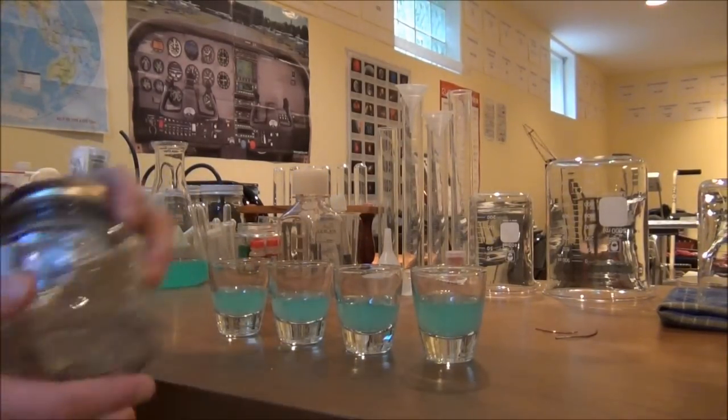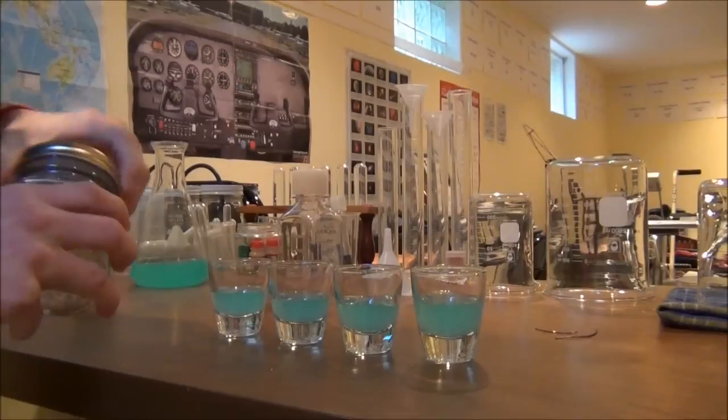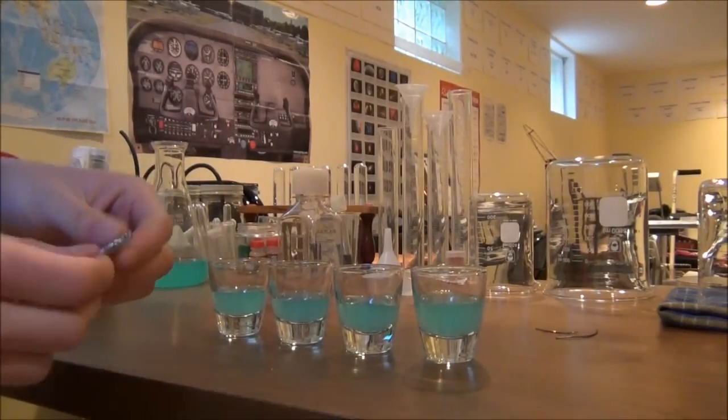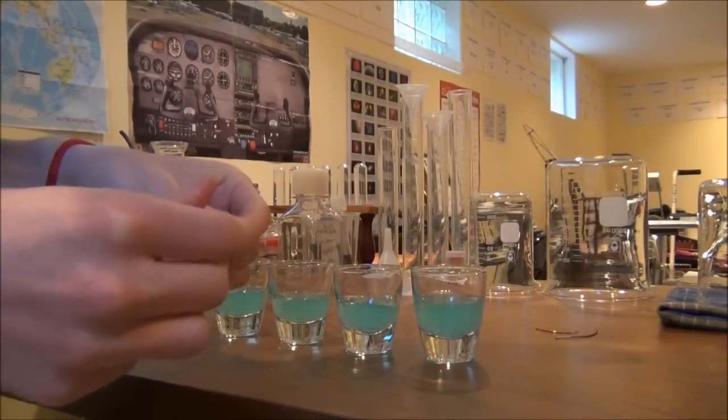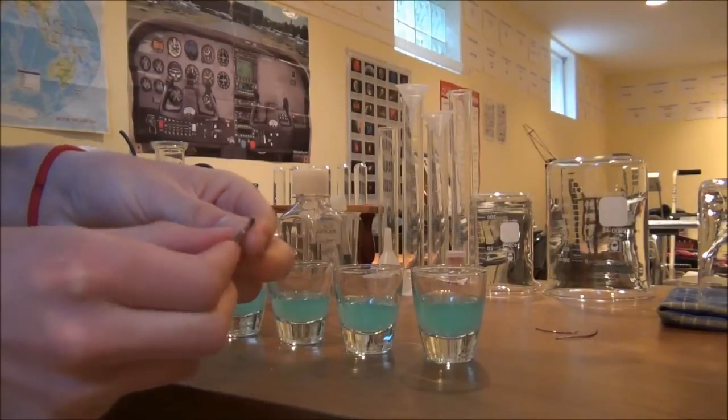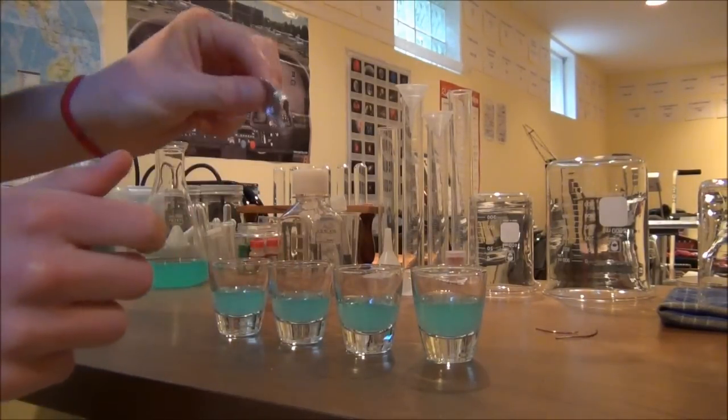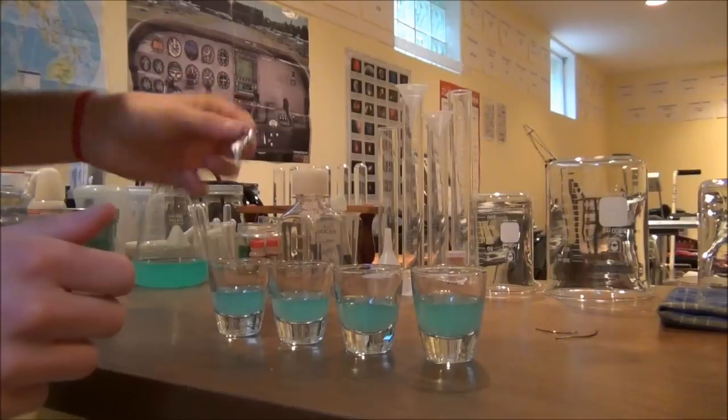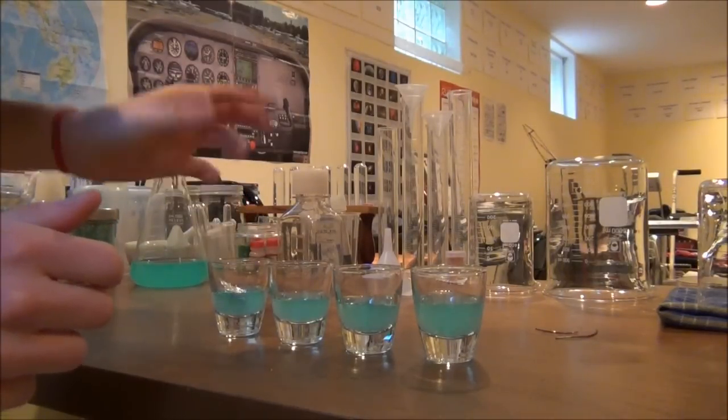So the first metal that we're going to be working with today is just aluminum and I'm just using aluminum foil. So we've got a little piece of aluminum foil. I'm just going to flatten it out a little bit and then we're just going to place it into our first shot glass with the copper 2 sulfate solution.